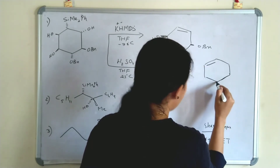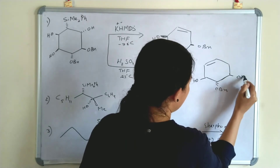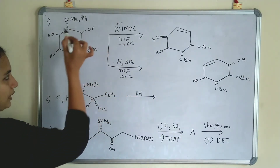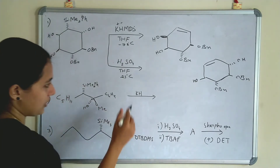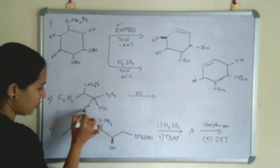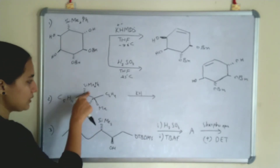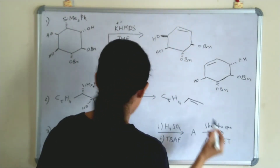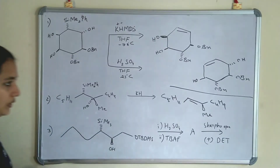The product has a double bond here, and OH, OBn, OBn, and below-plane OH remain. So when adding base, the elimination is syn-elimination, and when adding acid, the elimination is anti-elimination. In the second example, it is given KH — K⁺ and H⁻ — so it is a base. When adding base, the elimination is syn-elimination, so silane and OH should be in syn-position. It is already in syn-position, so we do not need to rotate. The double bond will come here, and the product is C5H11 with a double bond, Me, and C4H9.